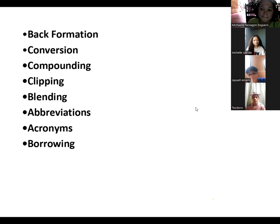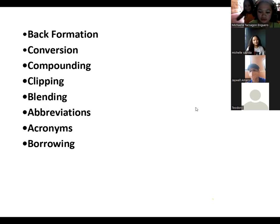Next is clipping. Mikaela, what is clipping? Clipping involves the shortening of a longer word. A word of more than one syllable is reduced. Example, math, which is clipped from mathematics. Examples include bro from brother, and so on and so forth, like champion is equal to champ. And next is abbreviation.